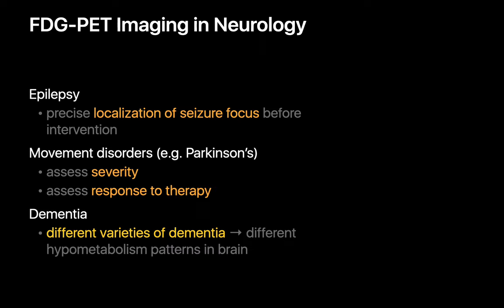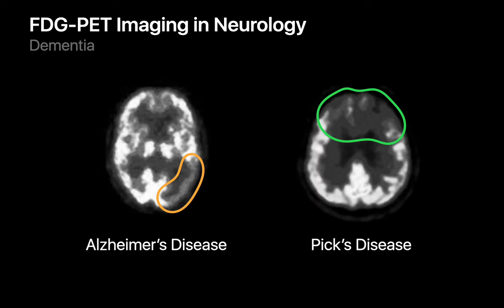Let's talk about the clinical applications of PET imaging in three major disciplines, starting with neurology. FDG PET imaging is commonly used to localize seizure foci in patients with epilepsy and to monitor the progression of diseases such as Parkinson's. The patterns of FDG uptake in the brain can also allow us to differentiate between different patterns of dementia, such as Alzheimer's disease — often characterized by reduced glucose metabolism in the parietal and temporal lobes — from Pick's disease, which is often characterized by reduced glucose metabolism in the frontal and anterior temporal lobes.